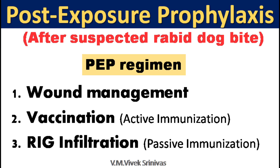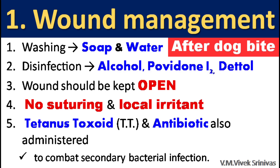For post-exposure prophylaxis, that is after suspected rabid dog bite, the following PEP measures are followed: (1) wound management, (2) vaccination, and (3) rabies immunoglobulin RIG infiltration. Wound management measures to be followed immediately include washing the wound with soap and water, then disinfecting with disinfectants like alcohol, povidone iodine and dedyl. The wound should be kept open for exposure to sunlight, suturing should not be done, and local irritants should not be applied. TT injection and antibiotics are also administered to combat secondary bacterial infection.